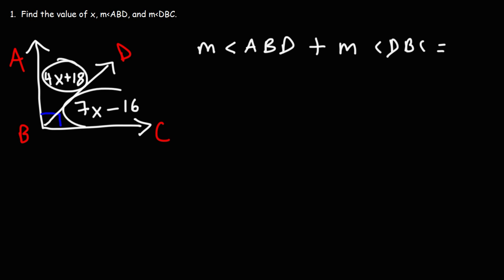Therefore, the two angles that are formed are complementary, meaning that they add up to 90. So our goal for this problem is to find the value of X, and then once we have that, we could find the angle measure of angles ABD and DBC.